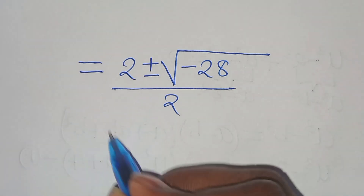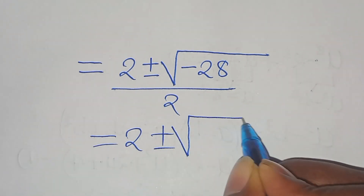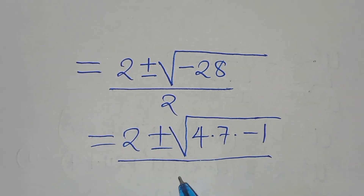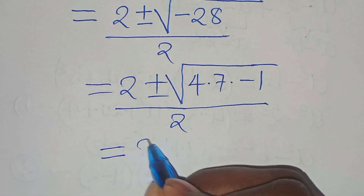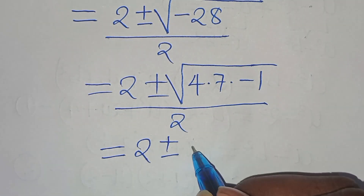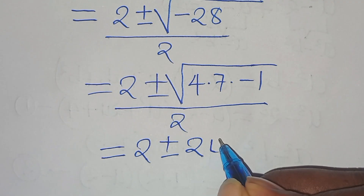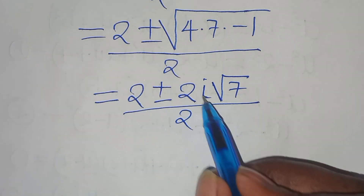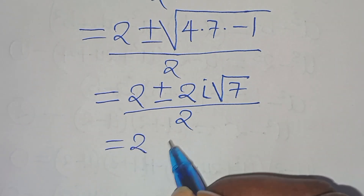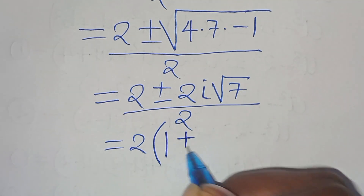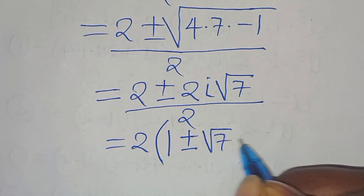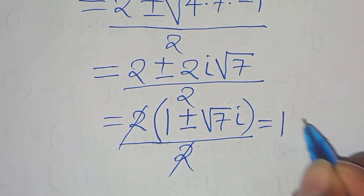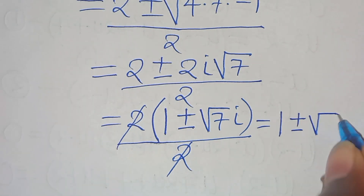We can express the square root of minus 28 as the square root of 4 times 7 times minus 1, divided by 2. The square root of 4 is 2, the square root of minus 1 is i, giving 2 plus or minus 2 times the square root of 7 times i, divided by 2. Simplifying, this gives 1 plus or minus the square root of 7 times i.